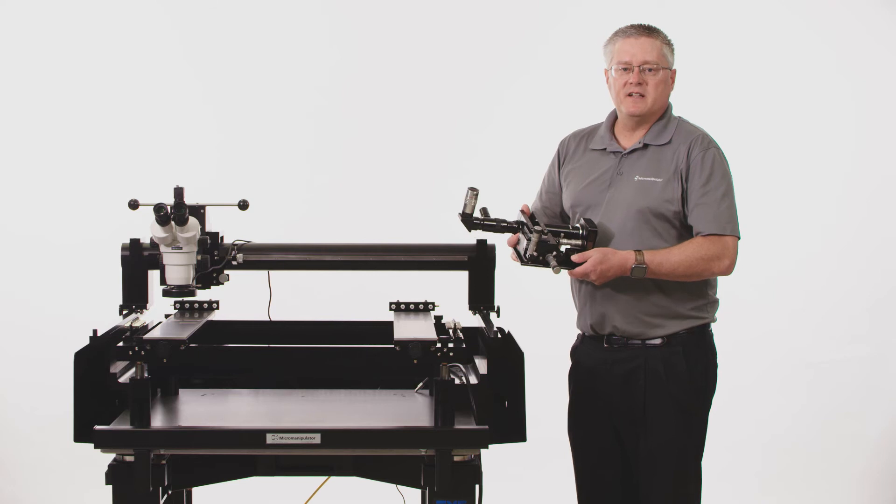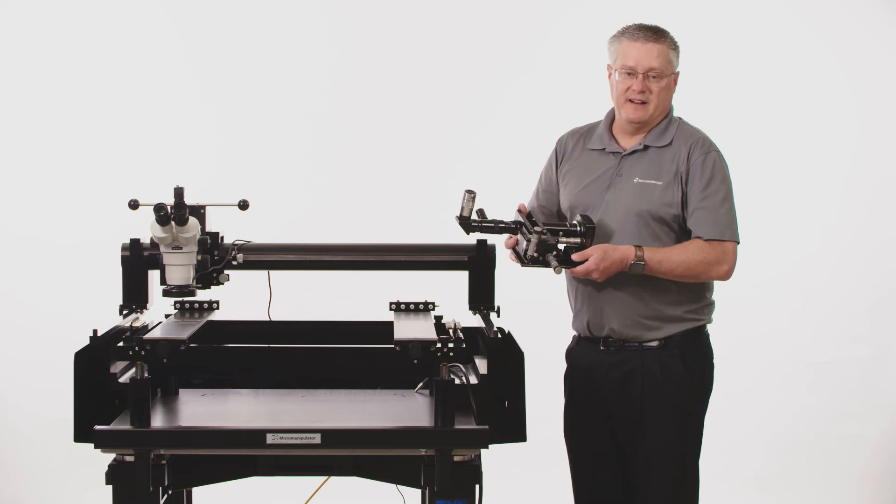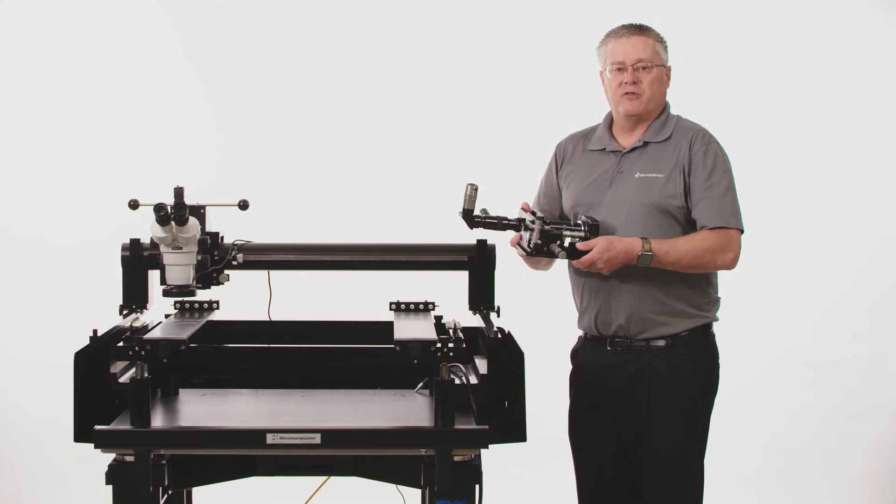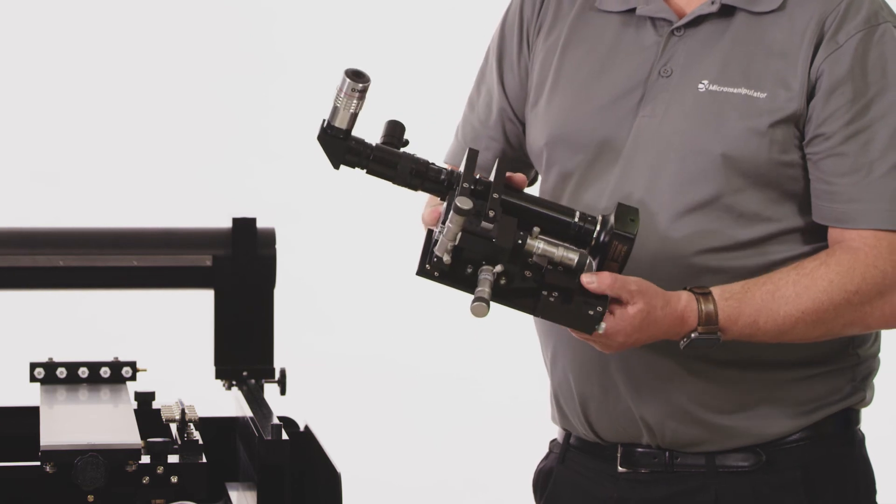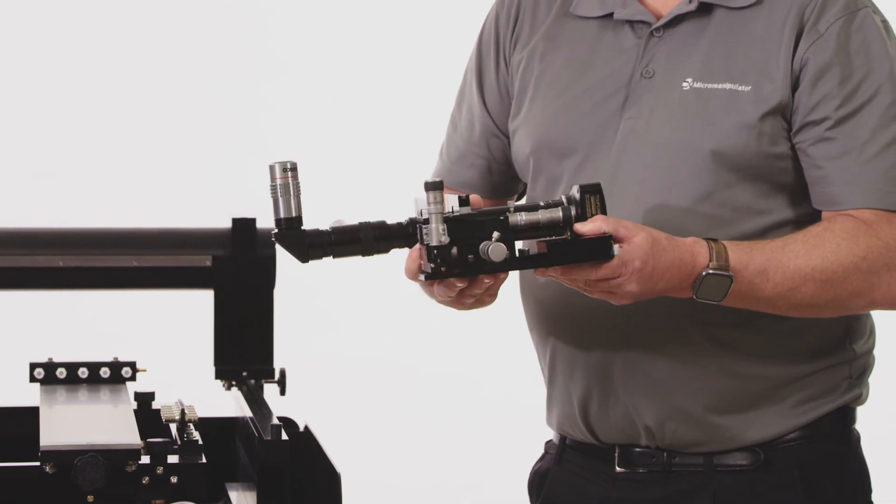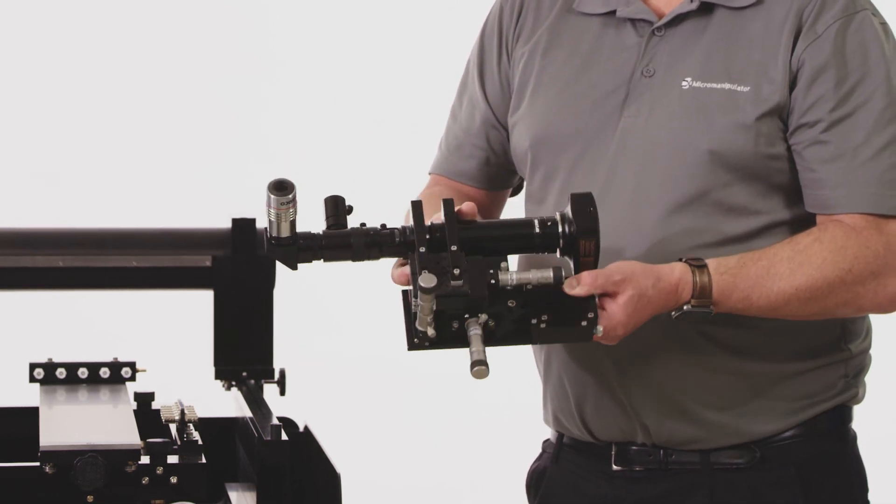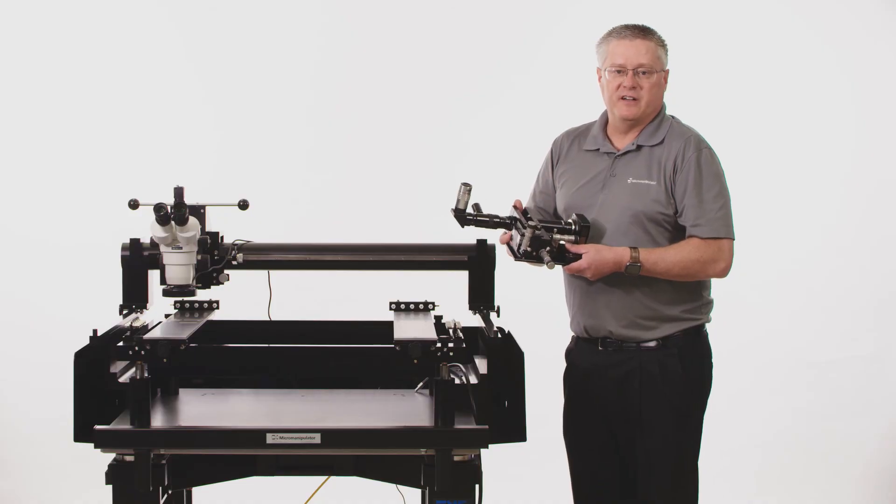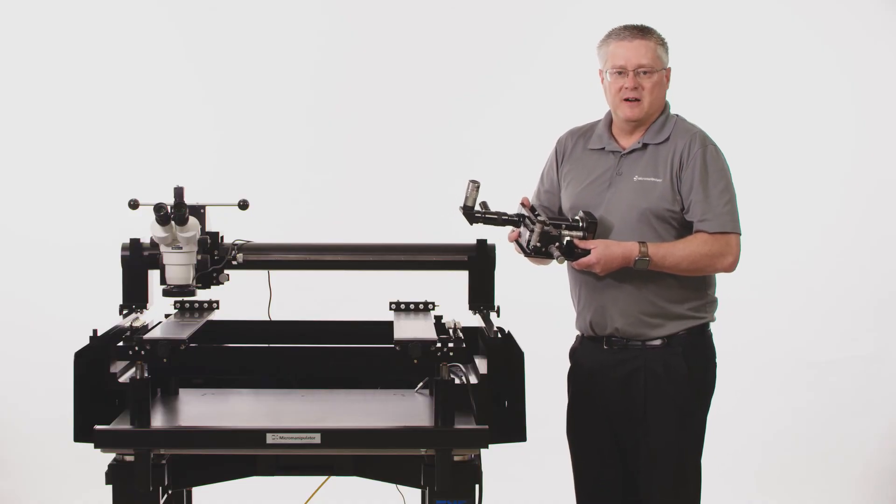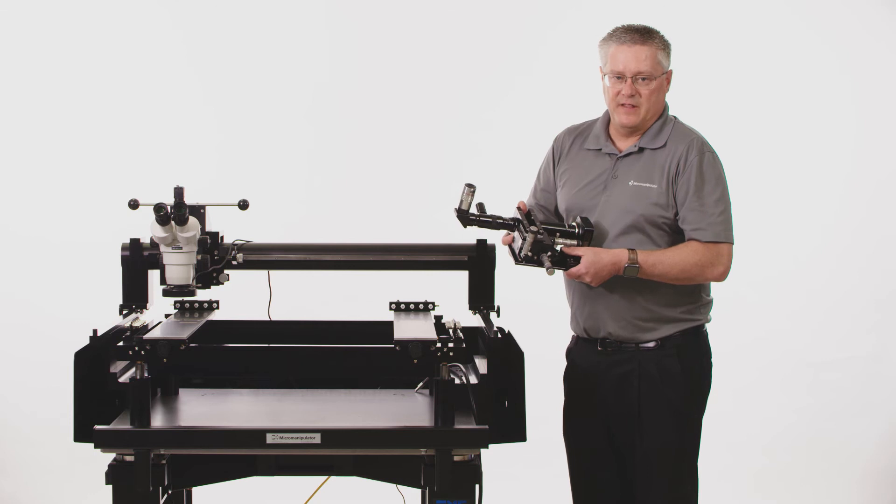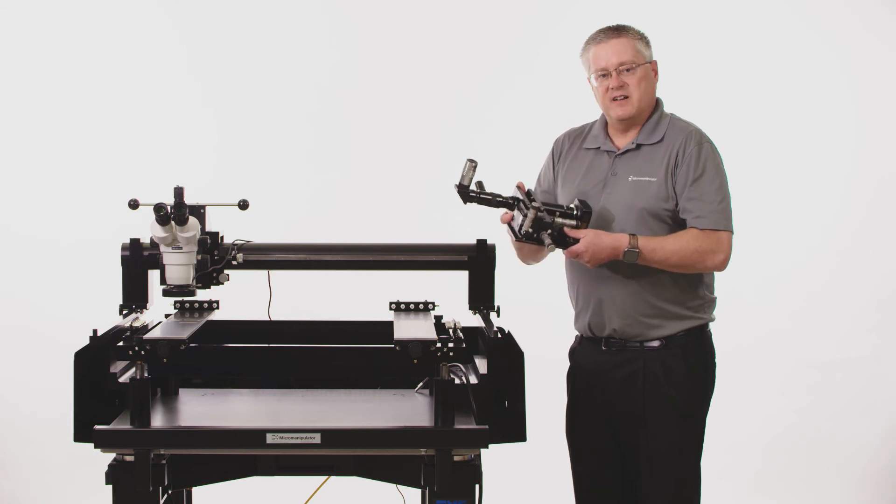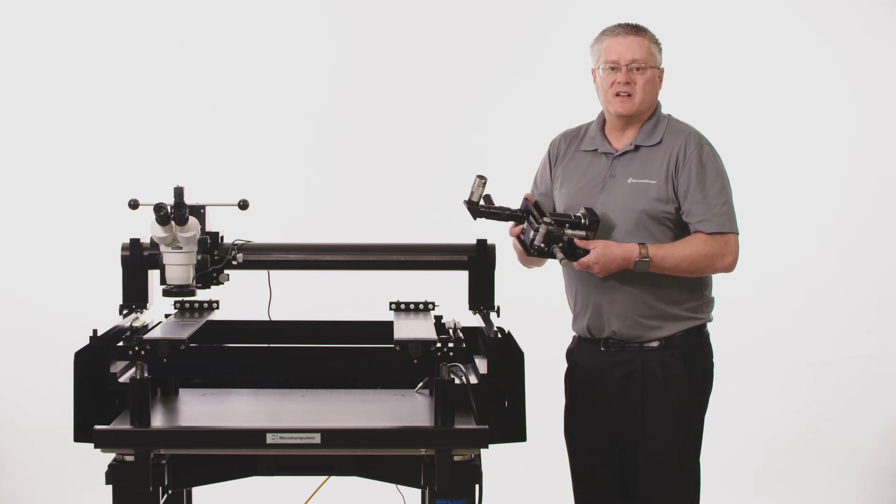The Versa can be easily configured for double-sided probing and imaging as well, allowing you to probe from both sides of the device simultaneously. Perhaps you maybe need to do some special imaging from the top for photo emission or whatever your application requires. The Versa can be configured for that. What I'll show you here is how you configure it for that bottom-side up imaging.